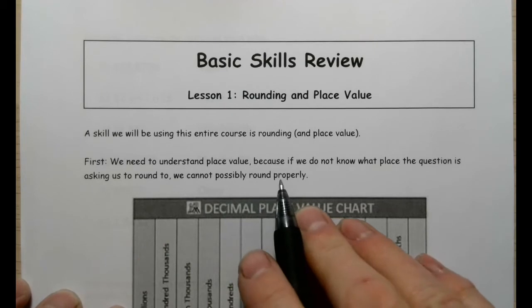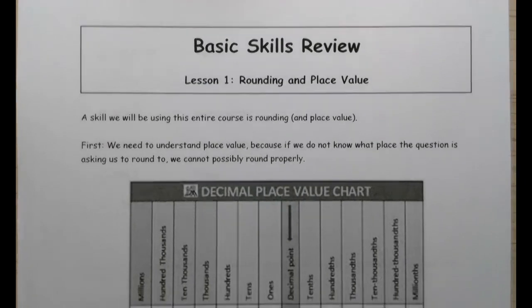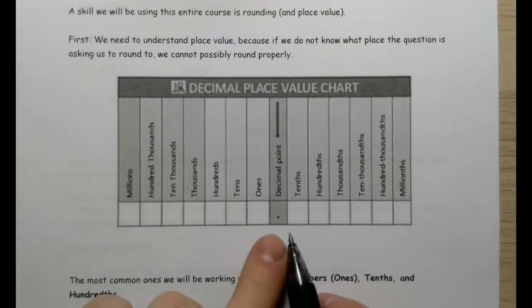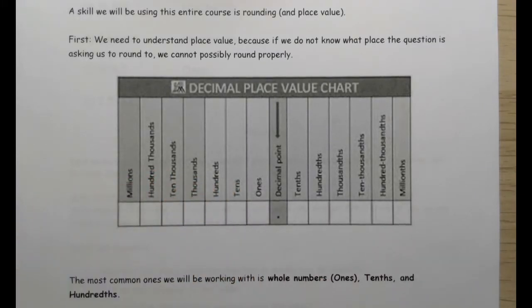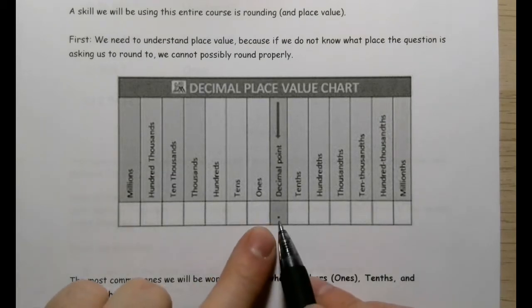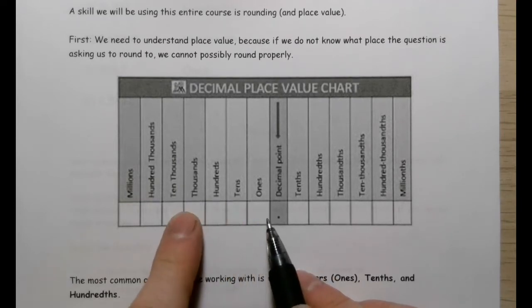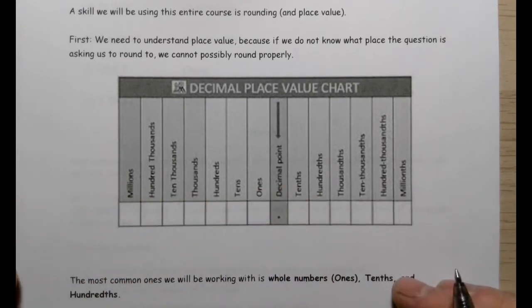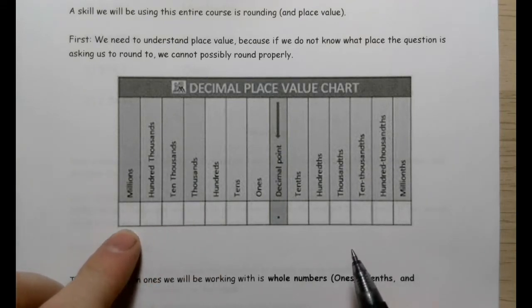First we need to understand place value, because if you don't know what place the question is referring to, it's impossible to round properly. Here's a little chart. To the left of the decimal are our counting numbers — the ones, tens, hundreds, thousands, ten thousands, and so on. These are very familiar, particularly because of money — tens of dollars versus hundreds of dollars versus millions of dollars.